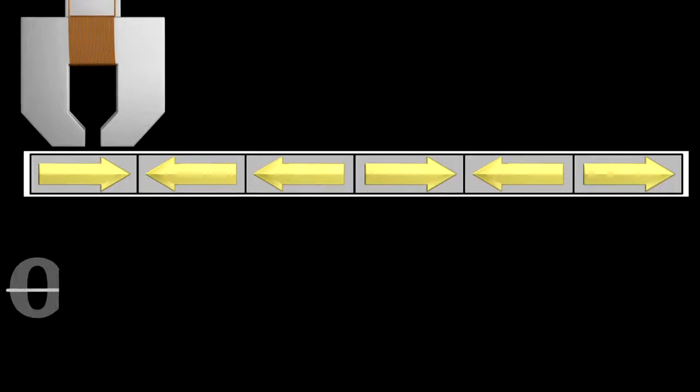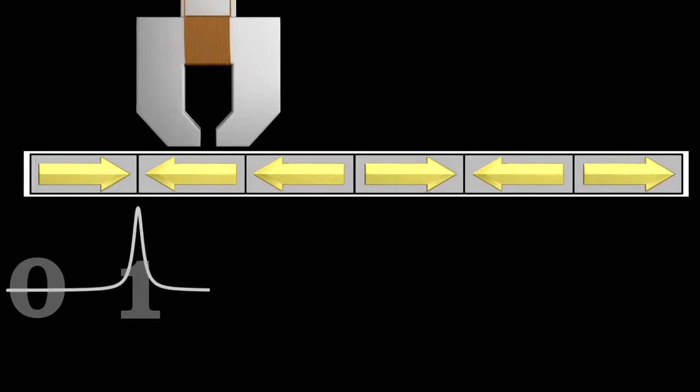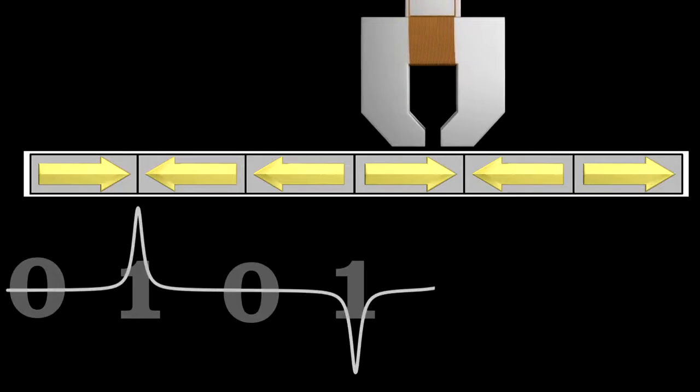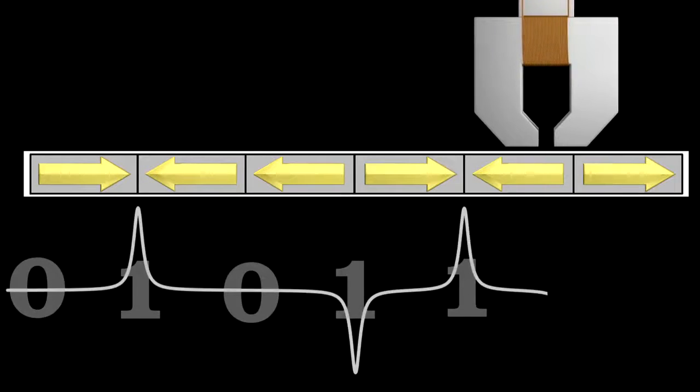As the head passes a section where the polarity has changed, it records a voltage spike. The spikes, both negative and positive, represent a one, and when there is no voltage spike, it corresponds to a zero.